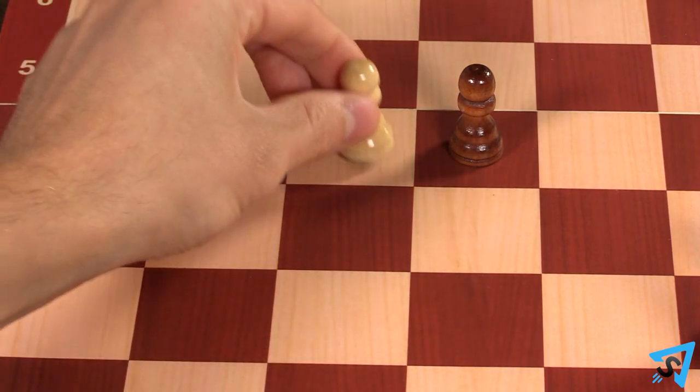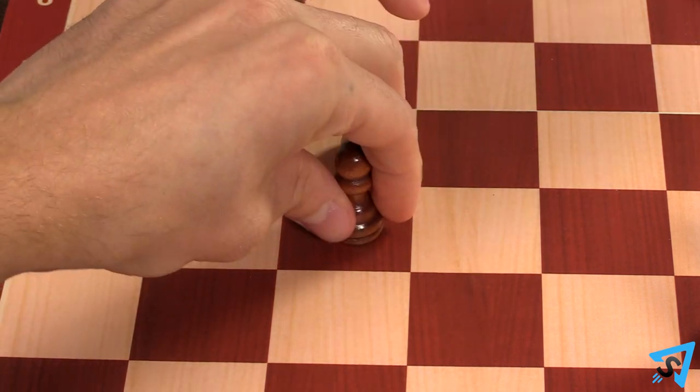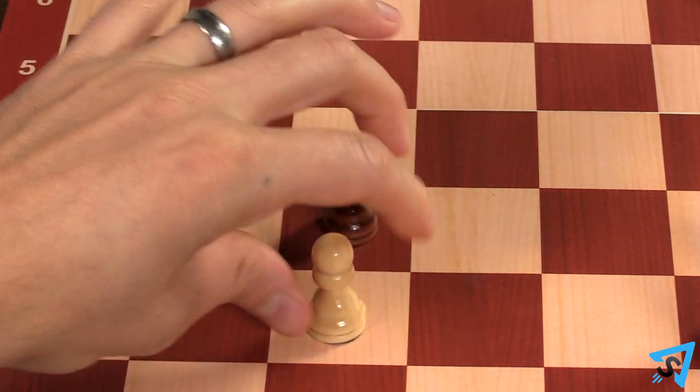If a pawn captures via en passant, it would be immediately in front of the reborn opponent's pawn, thus preventing either pawn from moving.